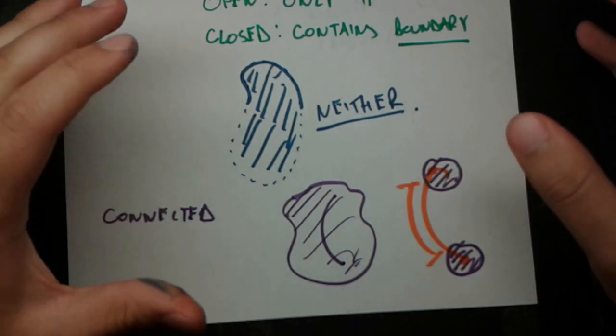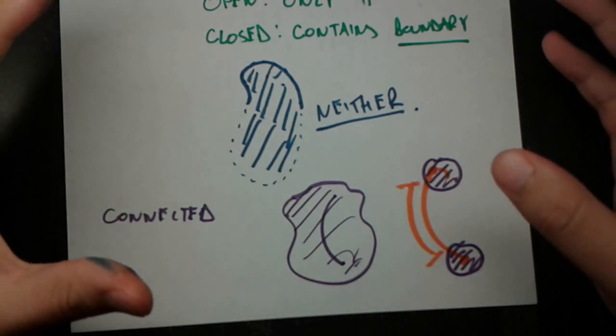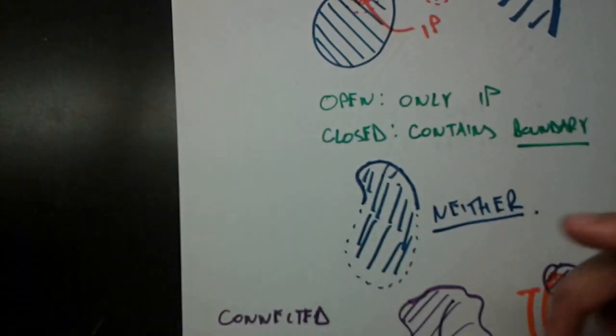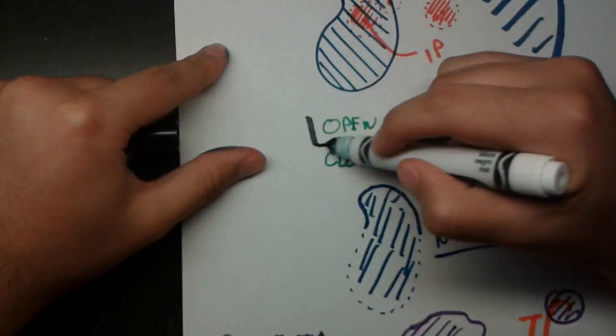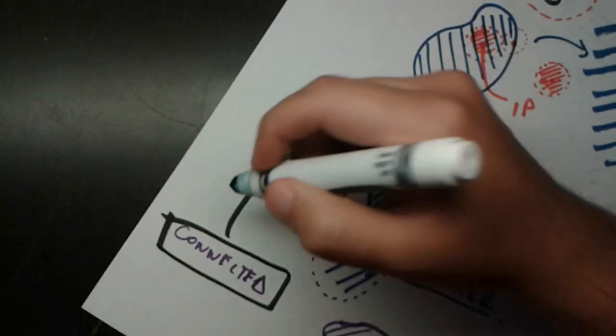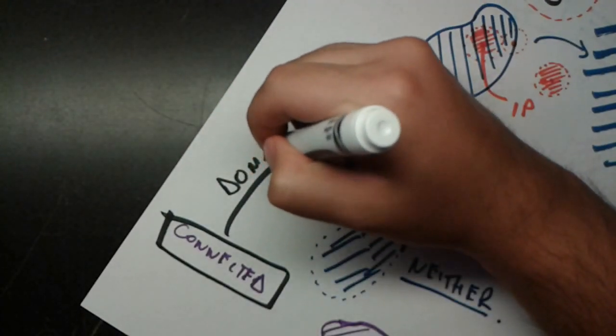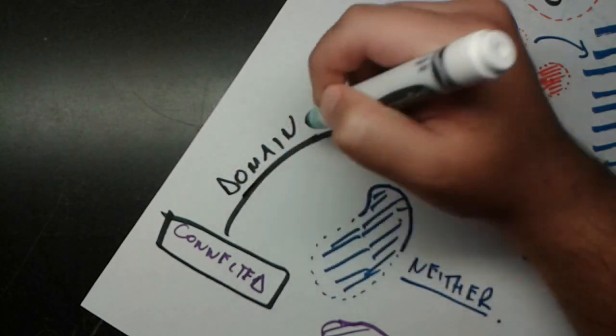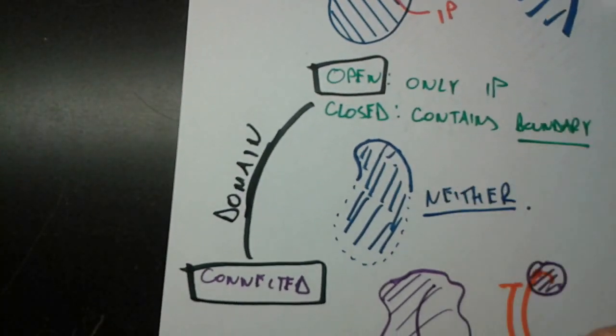And now we're going to kind of mix together two definitions we already have for another definition. So if a set is open and connected, if it's both, we call it a domain. And this will be important later on when we need to define domains of functions and stuff like that.